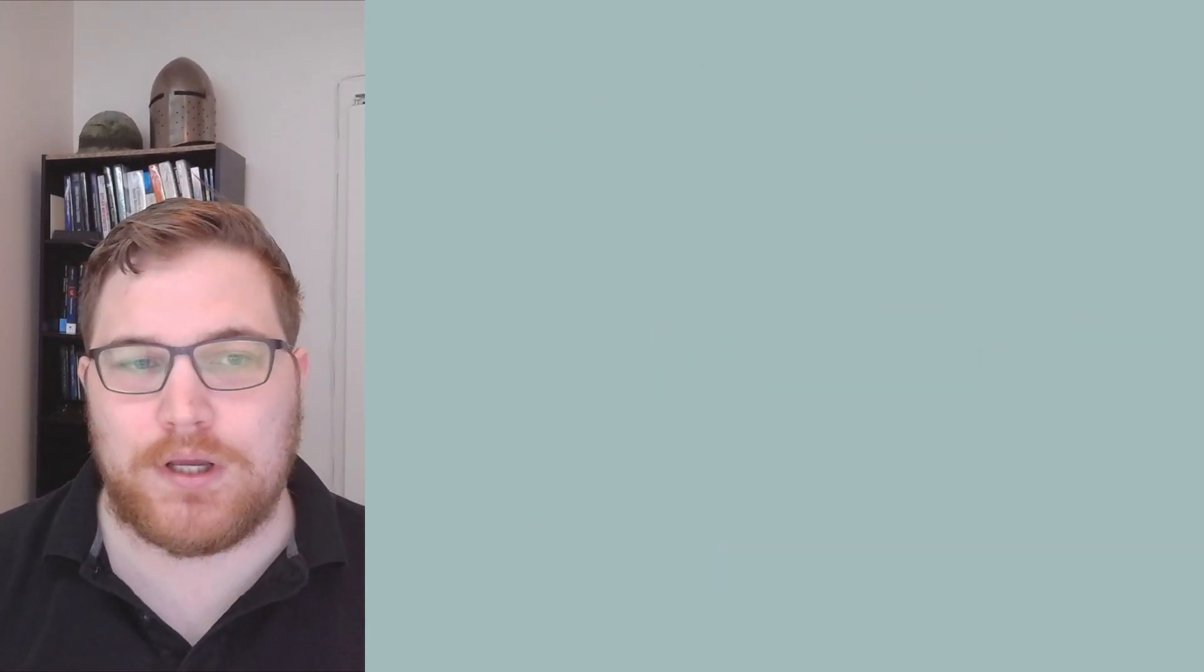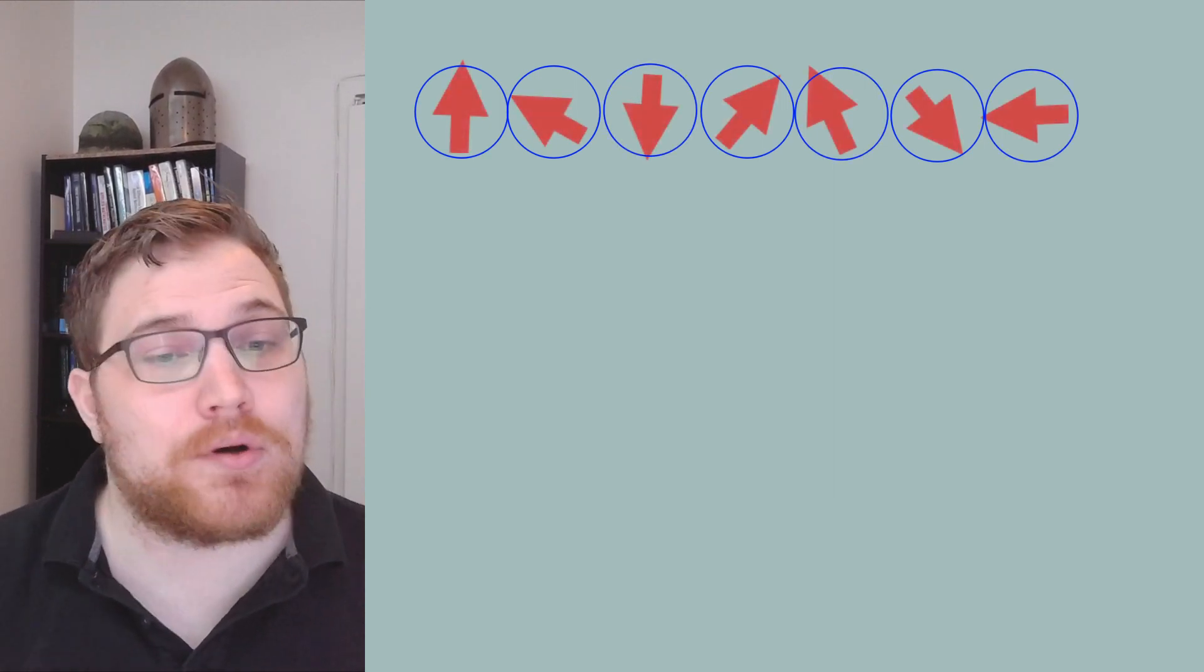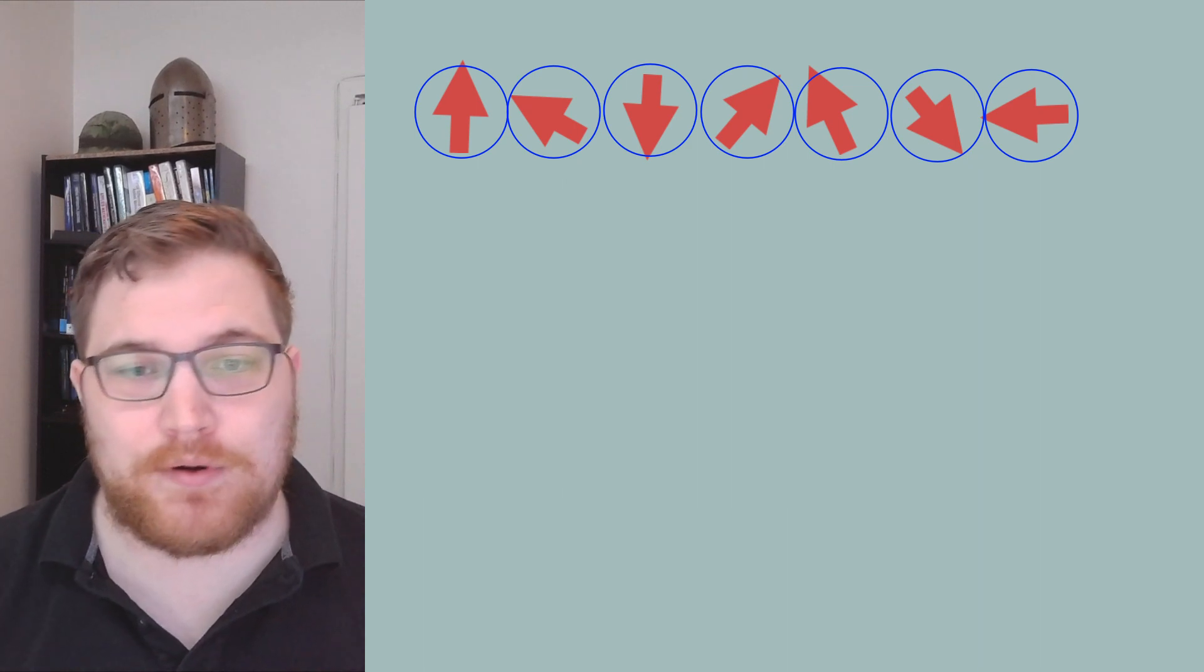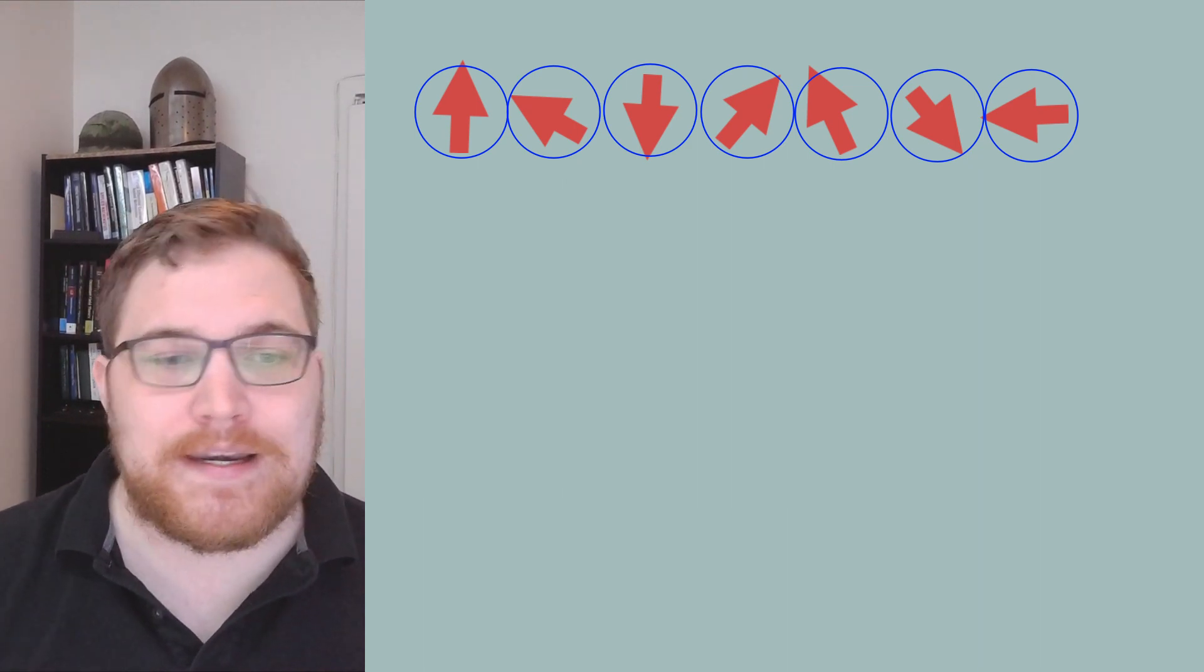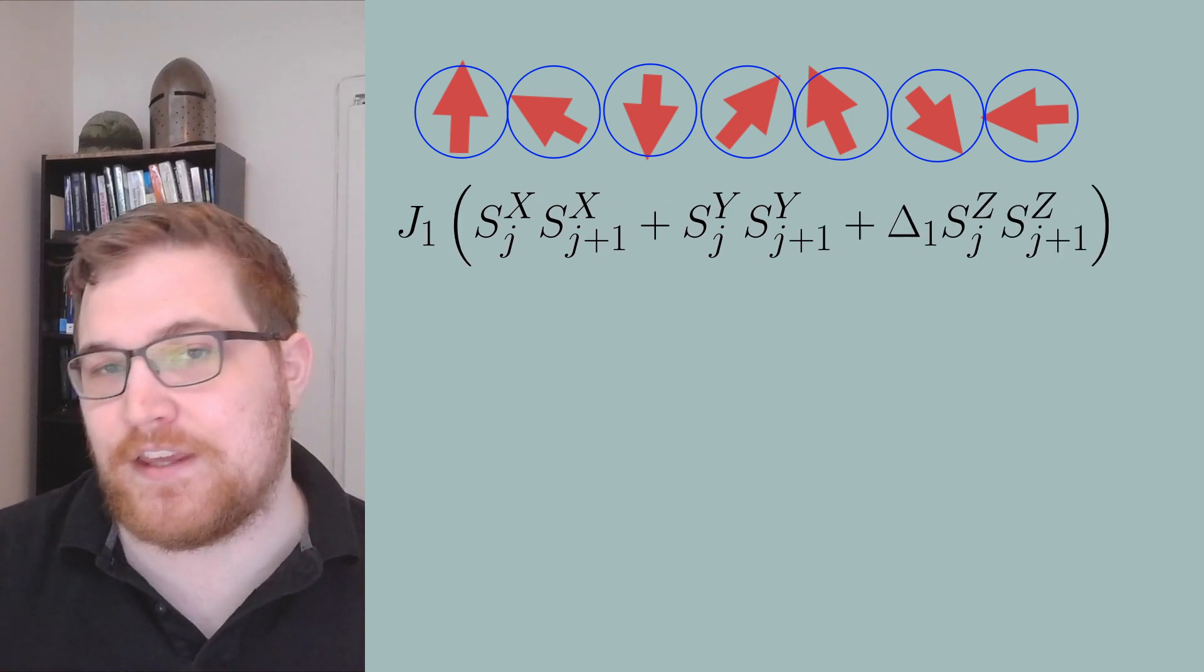The system I will show is a quantum spin model on a one dimensional lattice. The spins will interact with their neighbors and their next nearest neighbors. So for example, nearest neighbor terms in the Hamiltonian will look something like the following expression, where j1 and delta1 are choosable parameters.